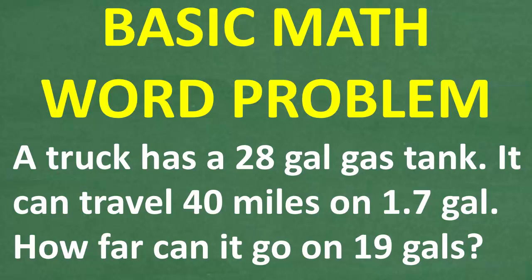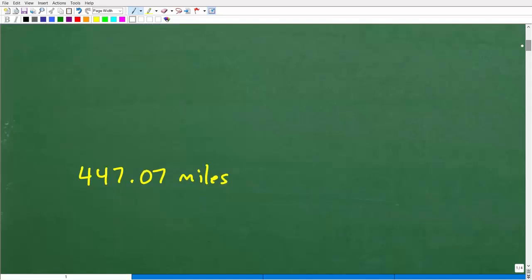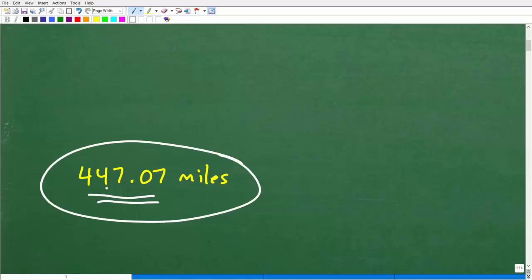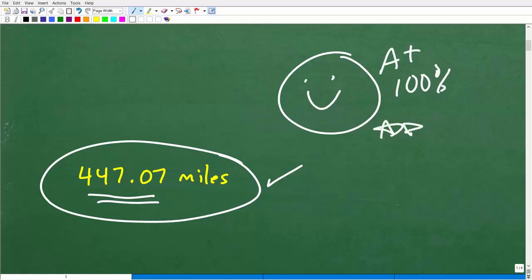Let's take a look at the answer to this problem. Here it is: 447.07 miles. So if you got something pretty close to this, if you're off a little bit, maybe 448 or 446, basically if you're in this ballpark, you got this answer correct. Let's celebrate your success with a nice little happy face and A plus, 100%, and a few stars. You can tell your friends and family today, I solved a math word problem, I am awesome. And indeed you are.